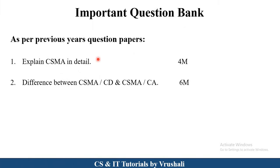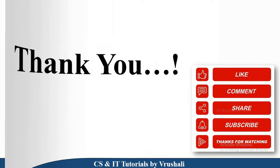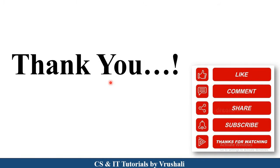As per previous year question papers, these are the most important questions: explain CSMA in detail for 4 marks, and the difference between CSMA/CD and CSMA/CA for 6 marks. This difference is one of the most important questions — you should prepare at least 6 points for the difference. Thank you, keep learning.